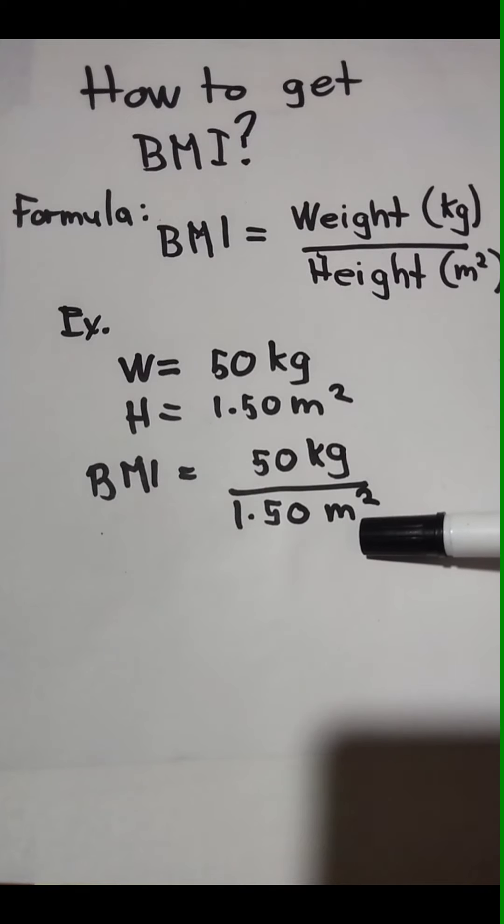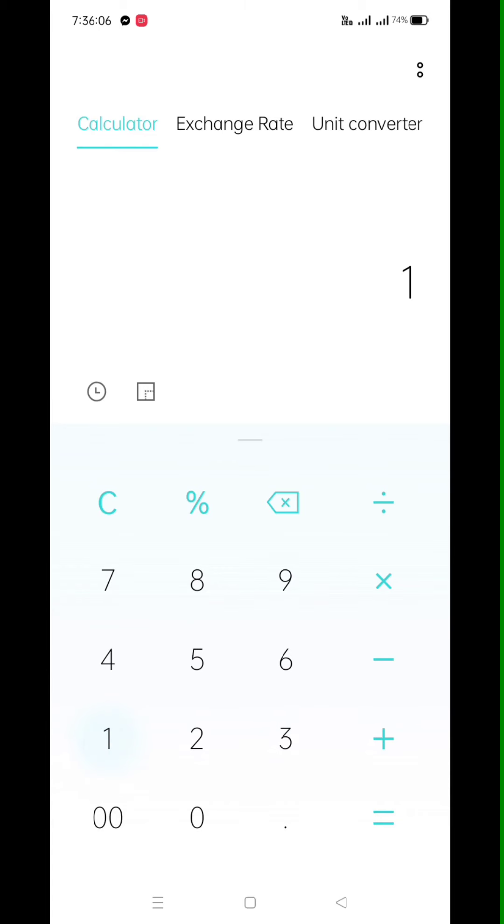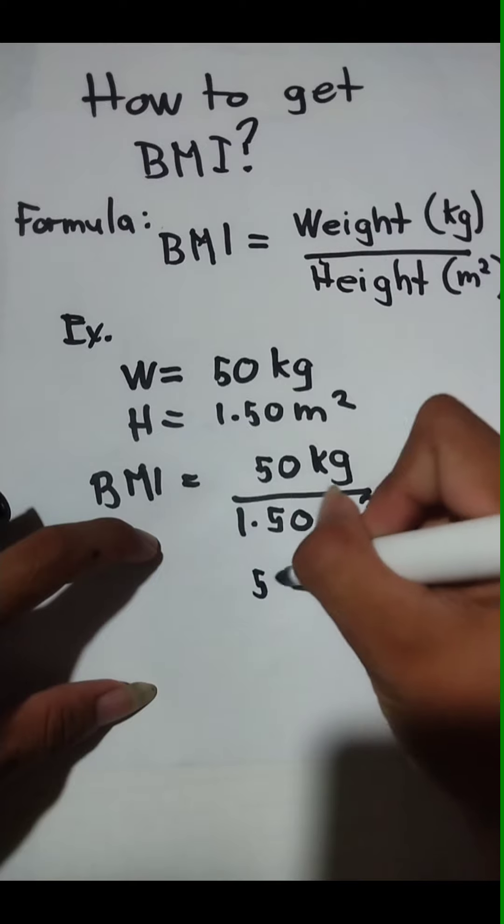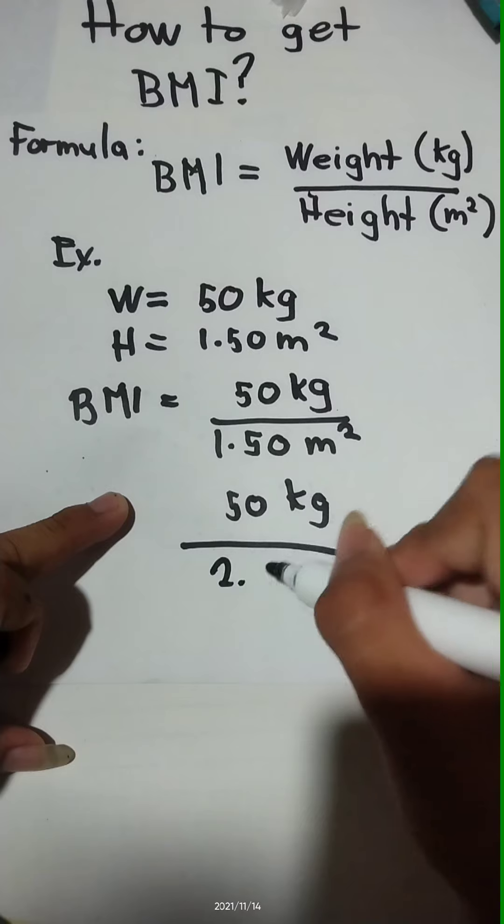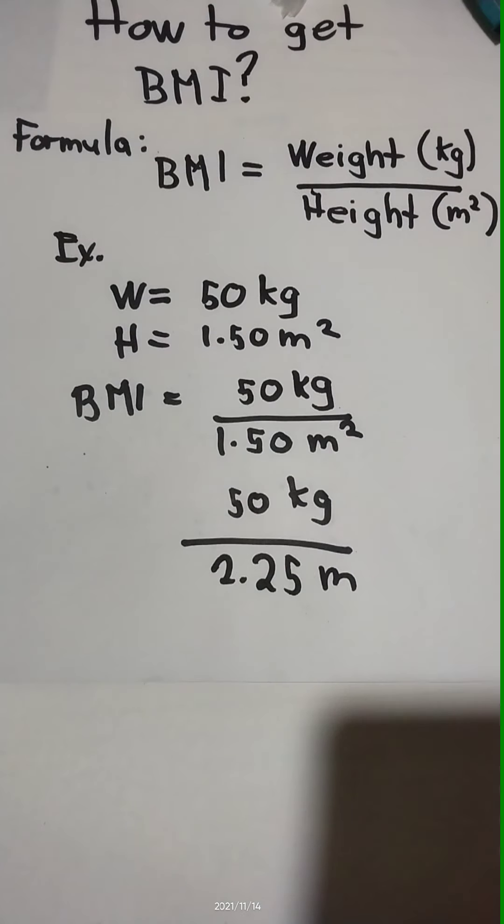As we can see, we have the unit of meters squared, so the value of height will be multiplied by itself two times. So 1.50 times 1.50 is equal to 2.25. So bring down the value of weight, which is 50 kg over 2.25 meters.